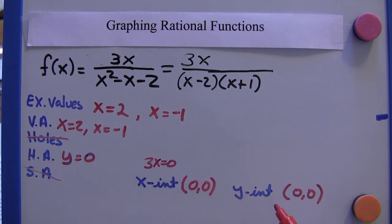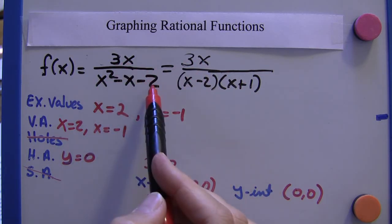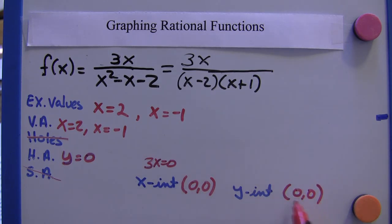And just to go through the motions here, to find the y-intercept, we would set x equal to 0 in this equation. We'd have 0 over negative 2, which is indeed 0. So the intercept is at the origin.